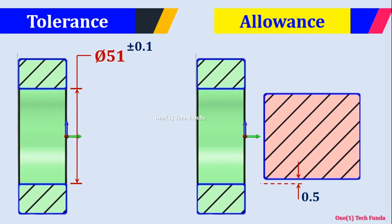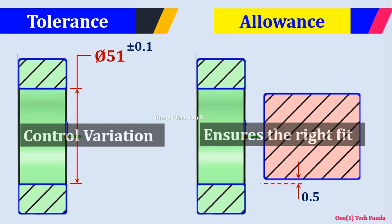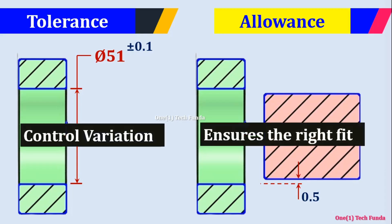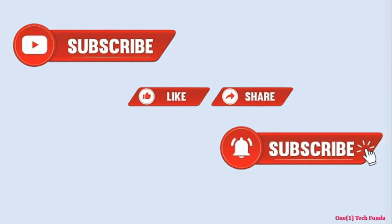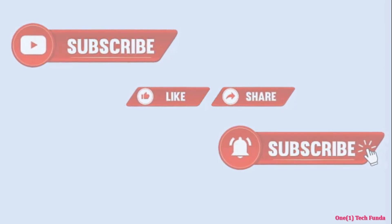So, the next time you work on a design, remember: tolerance controls variation and allowance ensures the right fit. Don't forget to like this video, subscribe to OneTechFunda, and comment your doubts below. And stay tuned for more engineering insights. Bye-bye.